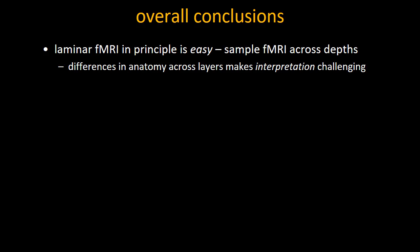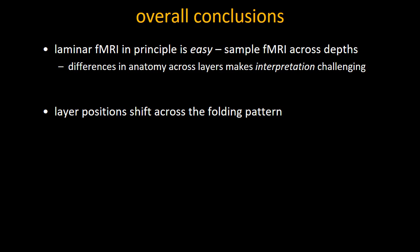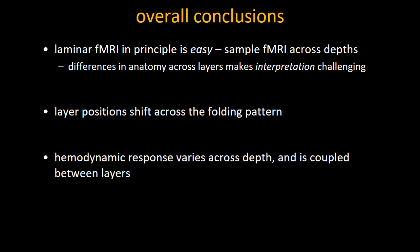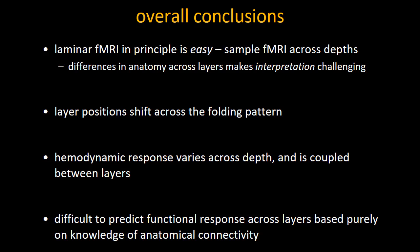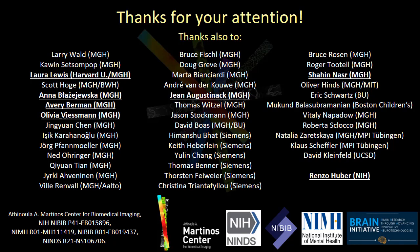To wrap up: laminar fMRI is in principle very easy — all we need to do is sample fMRI across depths — but differences in anatomy and microvasculature across layers make interpretation very difficult. Layer positions shift across the folding pattern, though we have techniques like equivolume profiling to account for this. The hemodynamic response varies across depths, is coupled between layers, and has asymmetric downstream effects. It is also very difficult to predict functional responses across layers from anatomical connectivity alone. Nevertheless, if we can address these challenges, I think there is still a lot of potential for laminar fMRI to provide fundamental new insights into brain function. Thanks to Renzo Huber for the animations and to members of the group, and thank you for your attention.